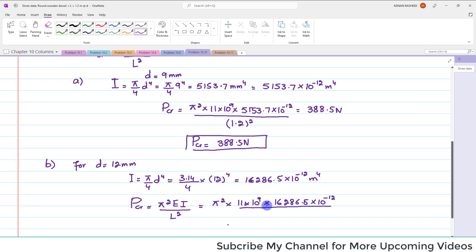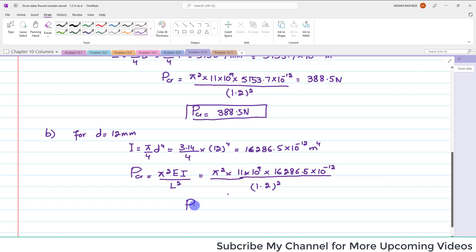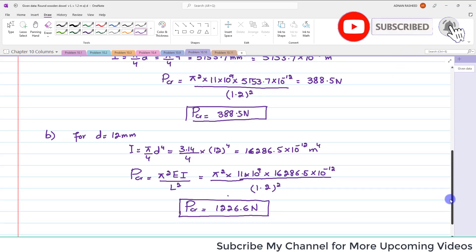Divided by L squared, and L is 1.2 whole squared. So when you solve this, the critical stress for this will be 1226.6 Newtons.